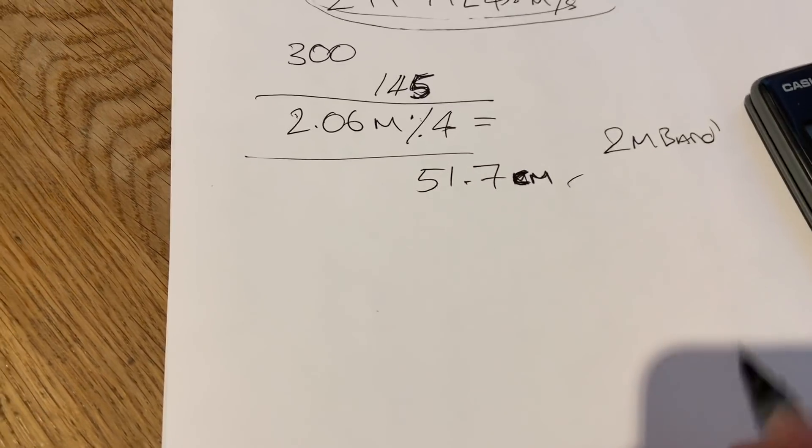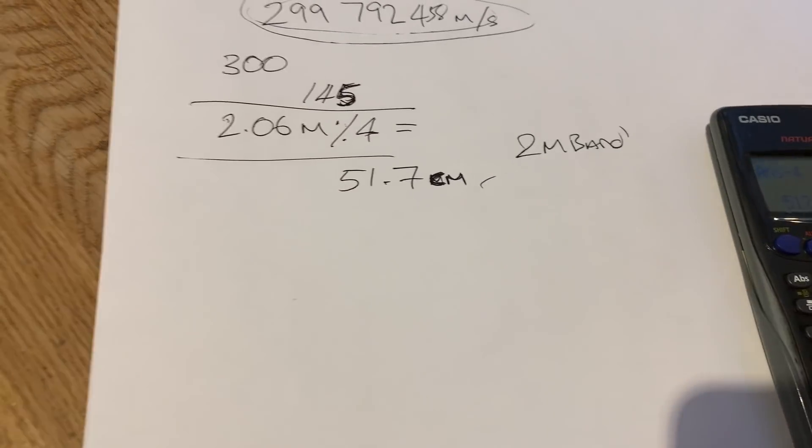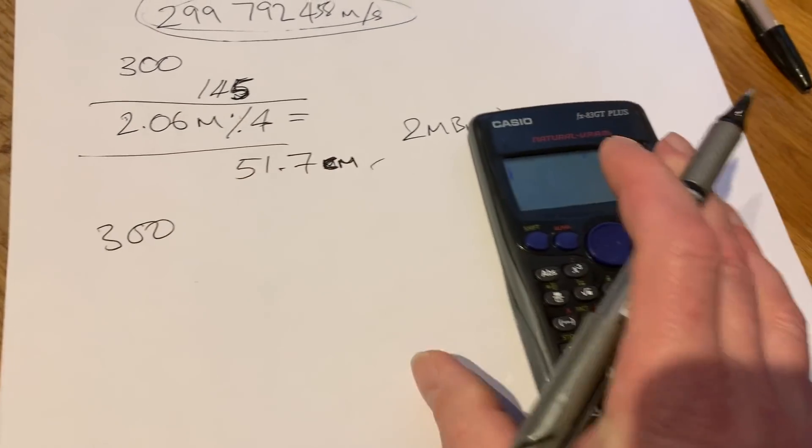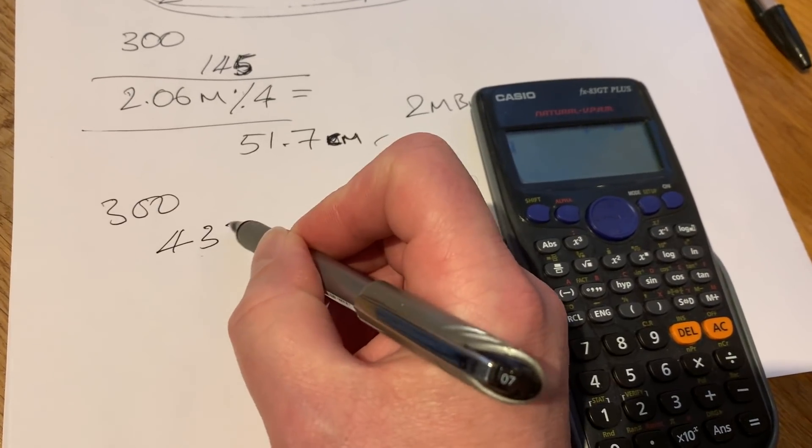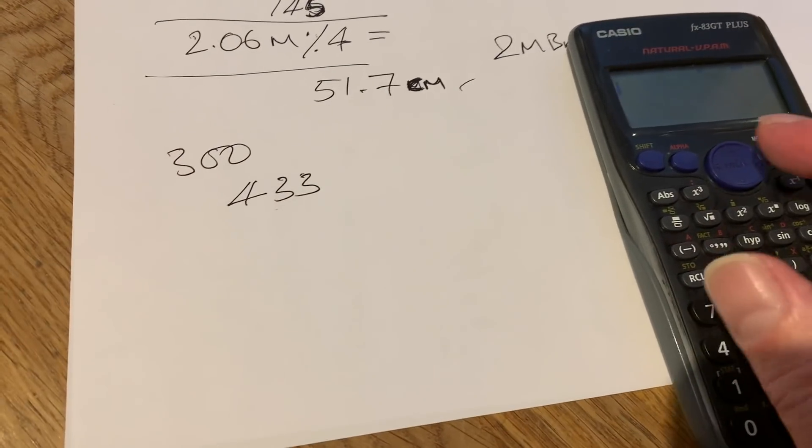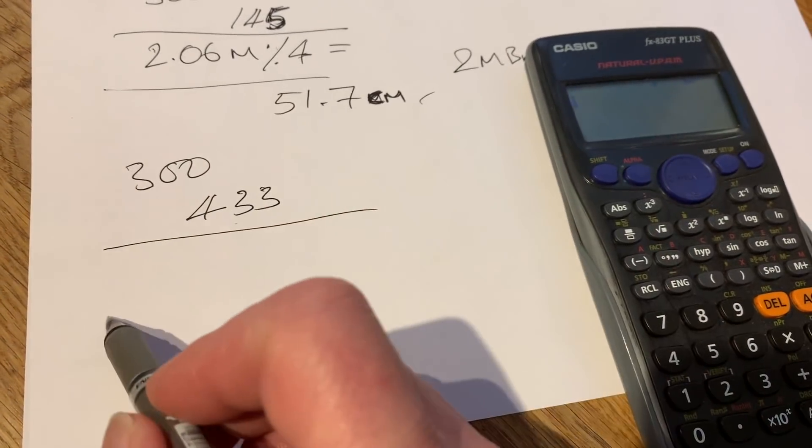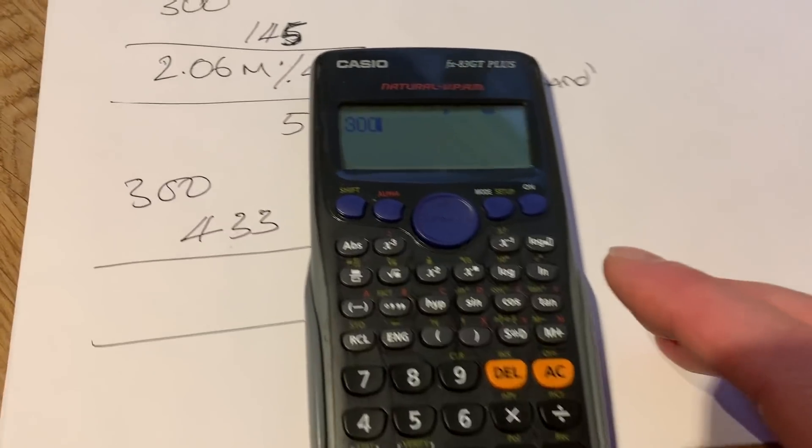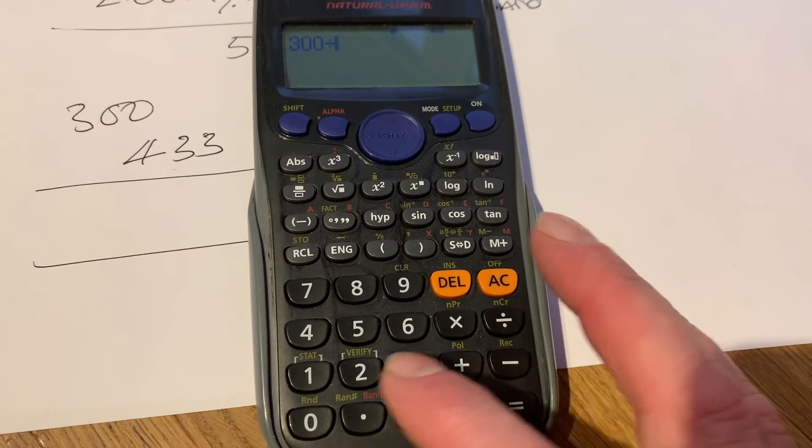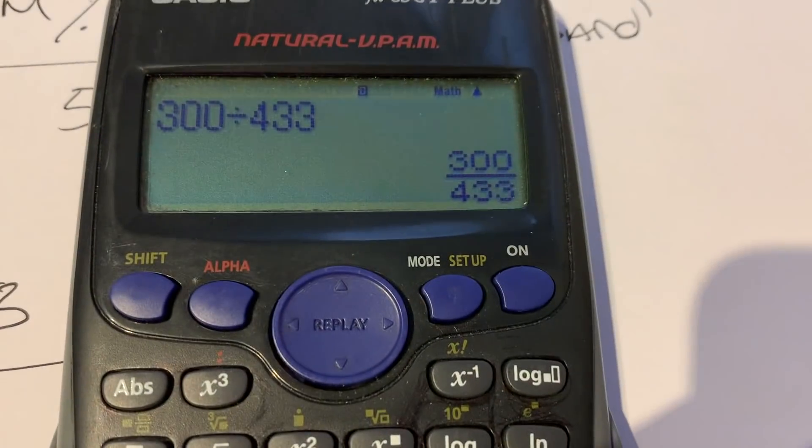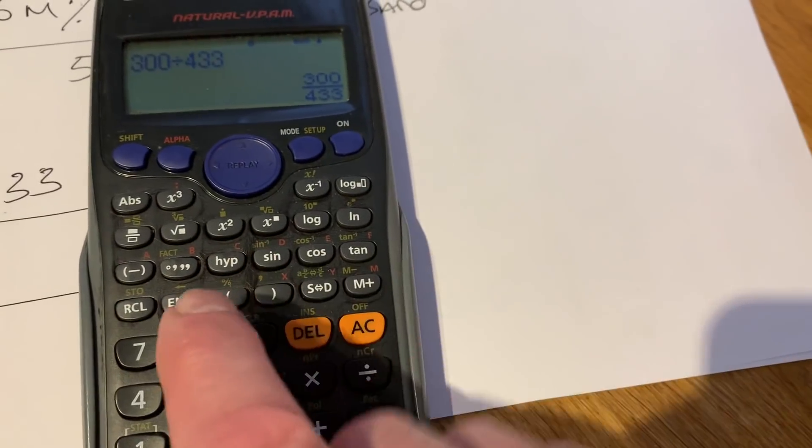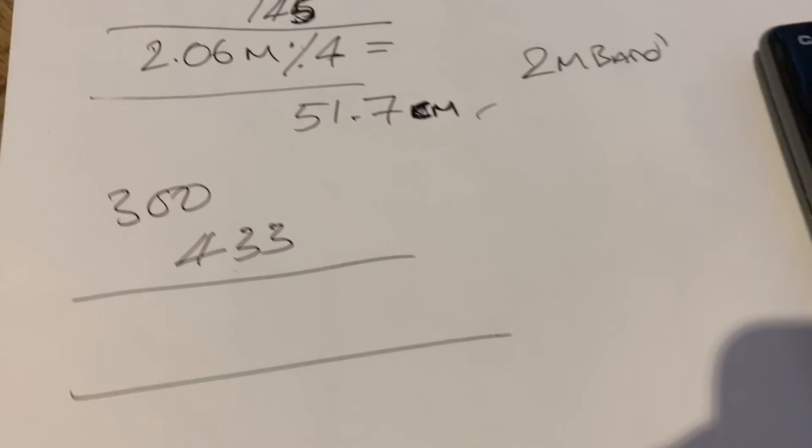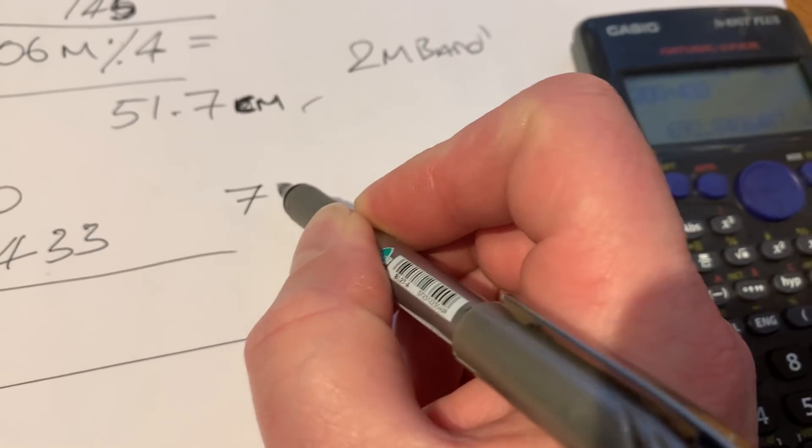But why does it work on 70 centimeters? Well, let's get a 70 centimeter frequency and work it out. So we've got a constant of 300 again, and let's use 433 MHz, which is the 70 centimeter band, or part of it at least. So 300 divided by 433 equals 0.692. So it's actually called the 69.2 centimeter band.